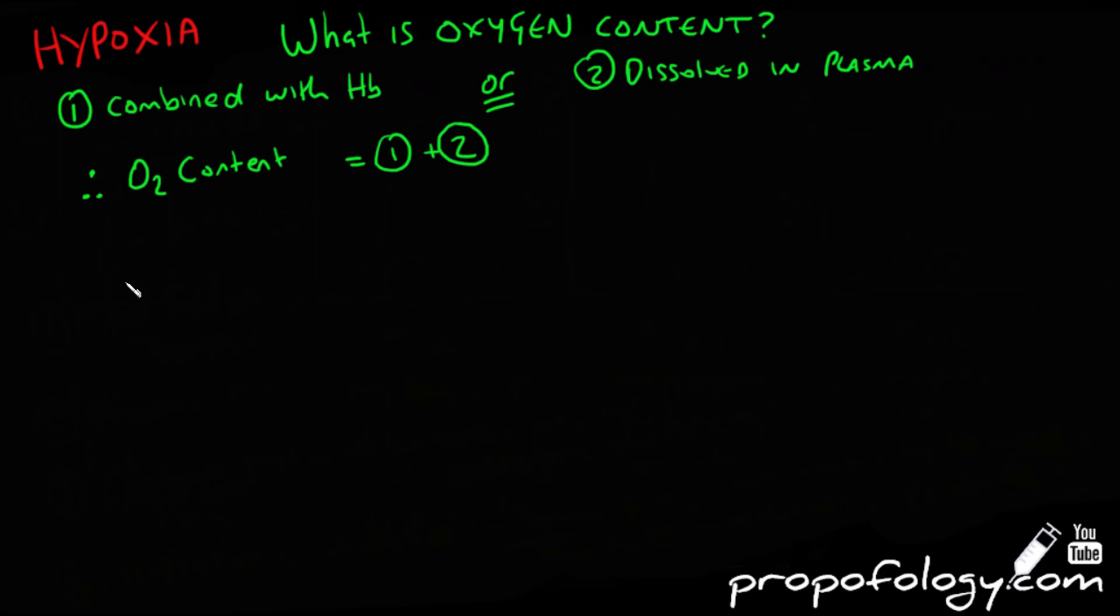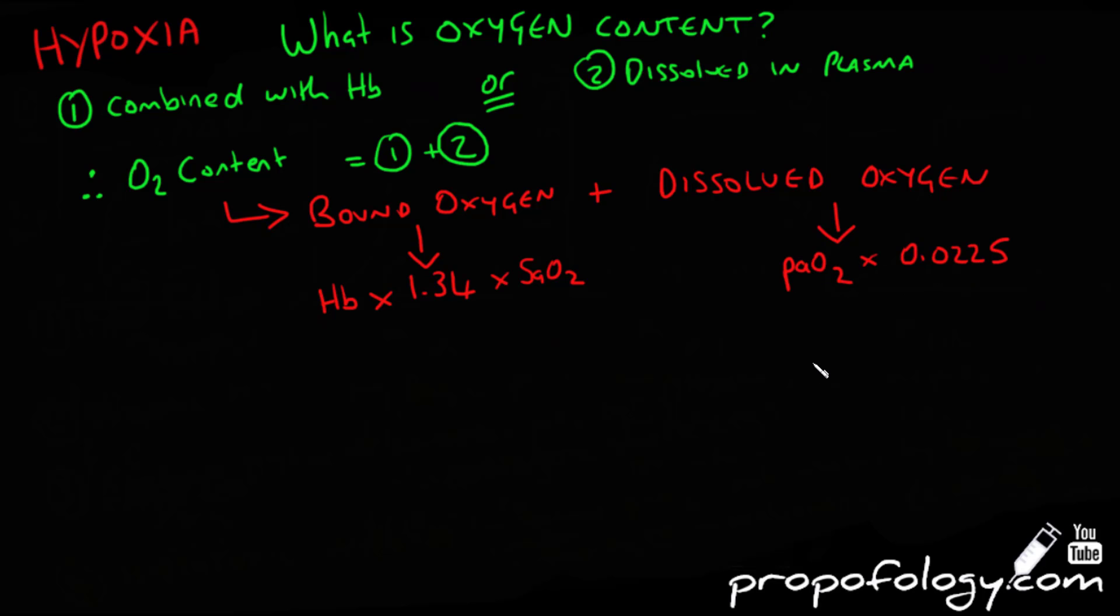Let's look at the equation even closer then. So we've got oxygen content equals the bound oxygen plus dissolved oxygen. And if we look at the components that make up bound oxygen, we've got haemoglobin, this value of 1.34 and the saturation of arterial oxygen. And then if we look at the dissolved oxygen, you can see it's PaO2 multiplied by 0.0225.